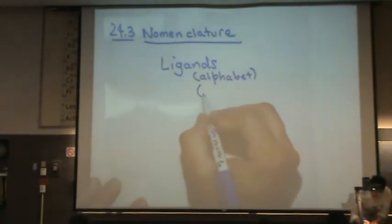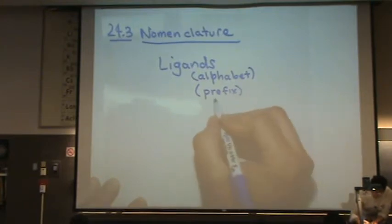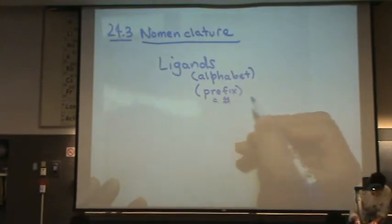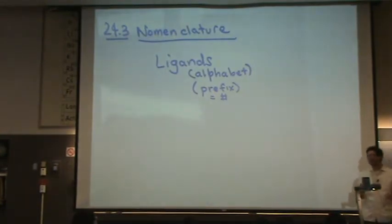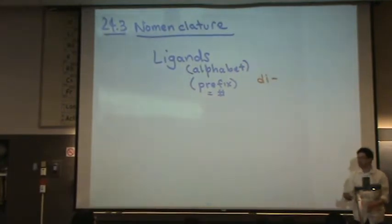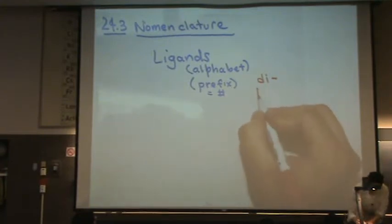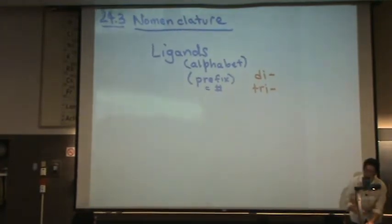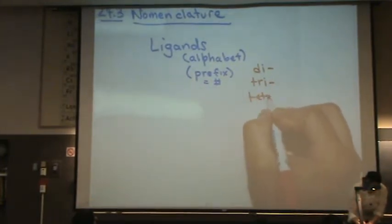You must put a prefix for the number of ligands. If there's one ligand, you don't really have to worry about it. But if there's two that are the same, you put di — so if there's two chlorines, you put dichloro. If there's three chlorines, you put trichloro. If there's four chlorines, you put tetrachloro.